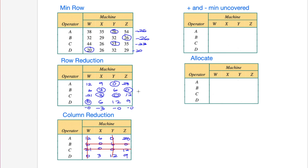If we do need the next step, we look at the minimum uncovered number - the smallest number not covered by any line. In this case it's 3, so we circle that. We then add 3 to all the crosshairs (numbers covered twice) and subtract 3 from all uncovered numbers. Numbers covered by a single line are just copied in, since those are often zeros and we want to preserve the best options in each case. Adding 3 to the crosshair positions: 6 plus 3 is 9, 21 plus 3 is 24.